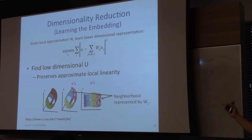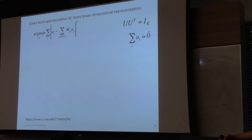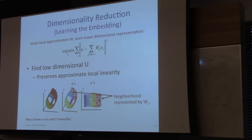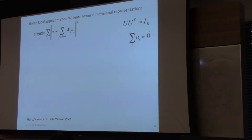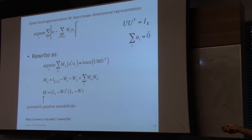We can enforce some constraints because the objective function is invariant to shifts — we could shift it all up or down without changing the objective. So we impose constraints to keep the solution unique. We can rewrite this as the trace of U M U-transpose, where M equals (I - W)^T (I - W). Since the rows or columns of W sum to one, M is a positive semi-definite matrix.